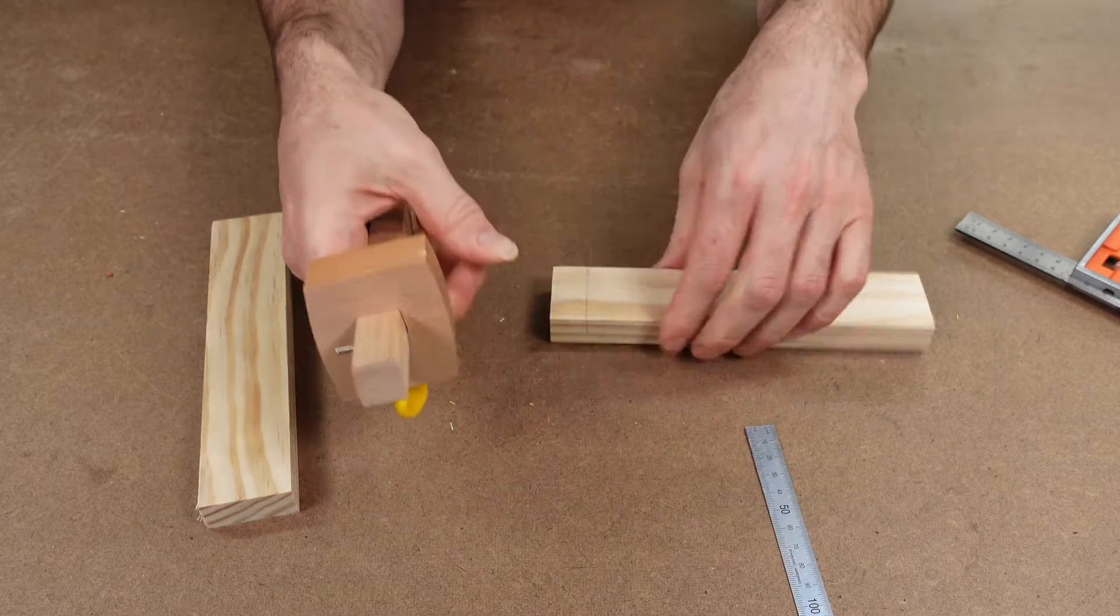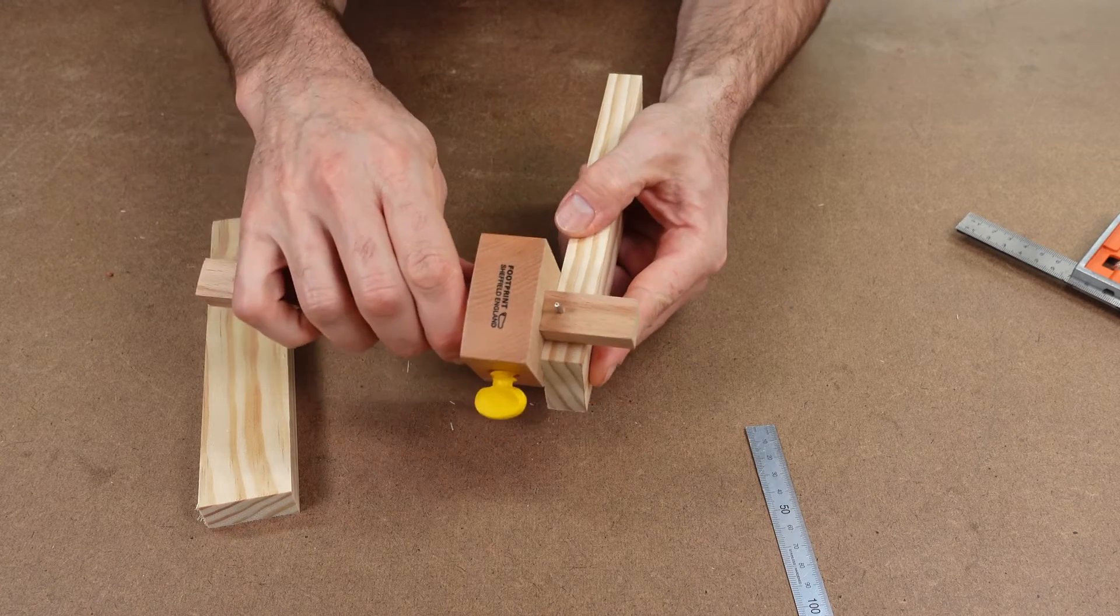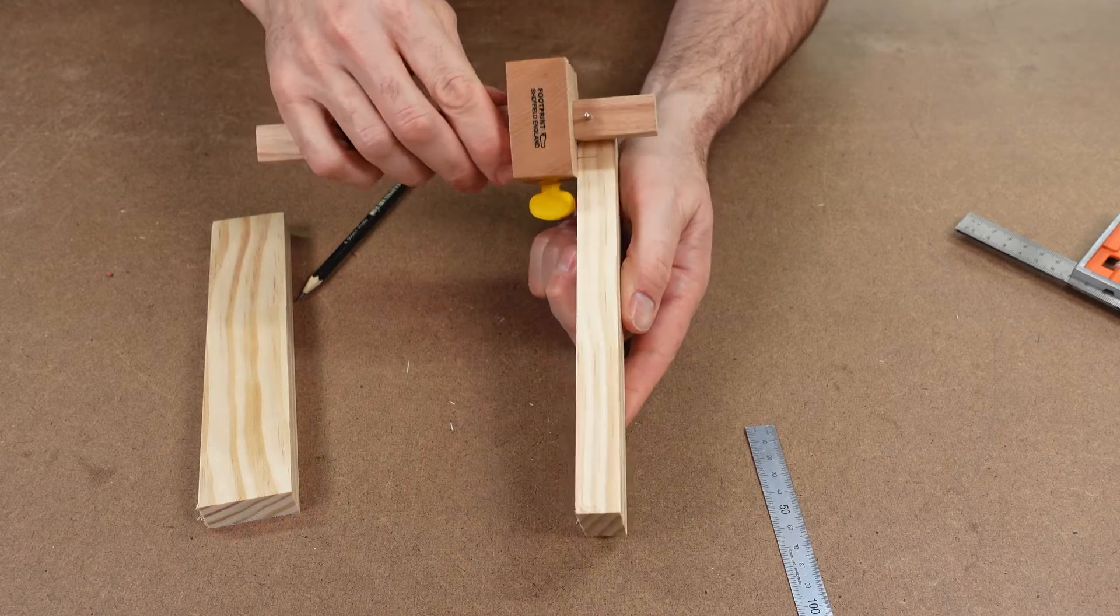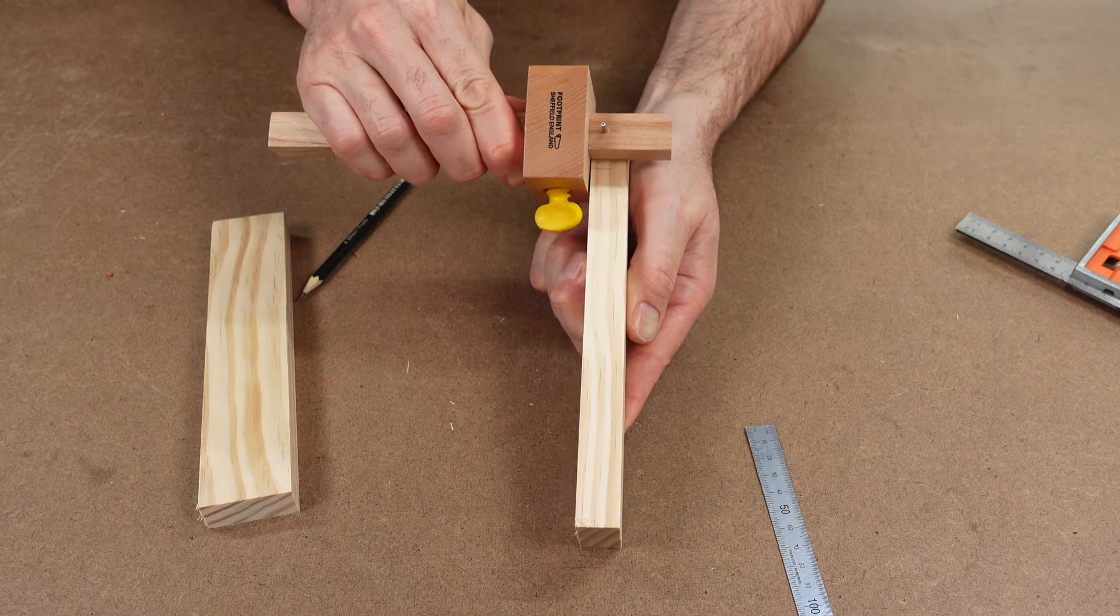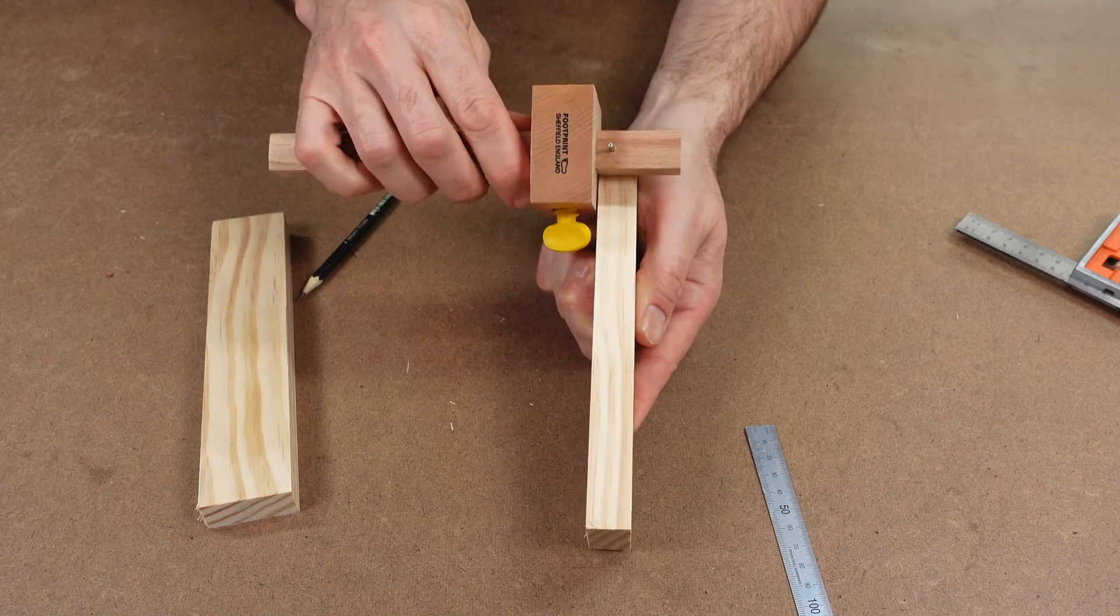Since the timber is 19 millimeters thick, we'll set the marking gauge to 9.5 millimeters. When demonstrating this to students, ask them what's half of 19. Guaranteed, there'll be plenty who say 8.5 millimeters. I don't know why. It's just one of those weird associations people make.